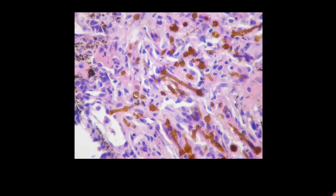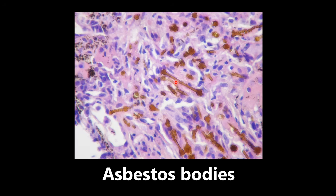This next picture is an example of asbestos bodies, and we see a nice long one really clearly right here. This is obviously seen in asbestosis, and these are also called ferruginous bodies, so be on the lookout for that term as well. They're seen in the lung, and they resemble dumbbells — you can see that with this narrow rod-like structure in the center and the two spheres on each end.